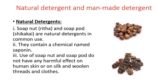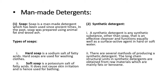Man-made detergents are of two types: soaps and synthetic detergents. Soaps are also of two types — hard soap, used for washing clothes, and soft soap, used while bathing. In earlier days, soap was prepared using animal fat and wood ash, but nowadays we have different methods. Synthetic detergents are any detergents other than soap used for cleaning any surface. Synthetic detergents are also used in cosmetics and can be used in hot water. Thank you.